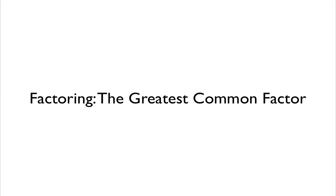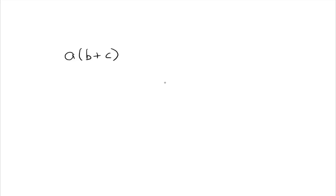In this video I want to talk about factoring the greatest common factor. Factoring out the greatest common factor from an expression is really just the reverse of the distributive property. Remember the distributive property said if you had a times b plus c, that was the same thing as a times b plus a times c — you could distribute the a through.